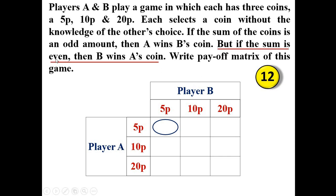Since the sum of 10 paise is even, B wins A's coin. When B wins, the value is negative. A's coin is 5 paise, so the value in this cell is minus 5.